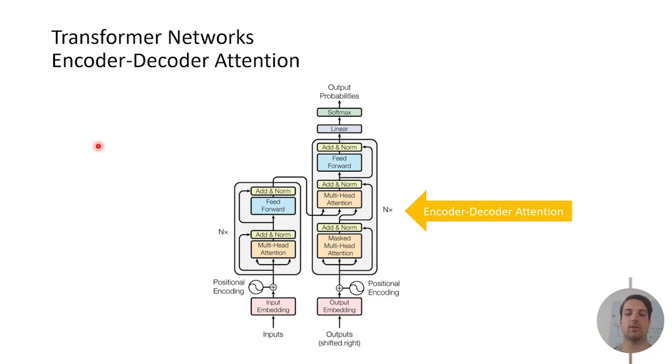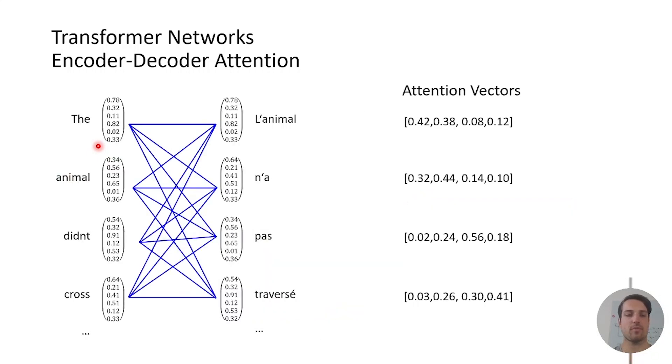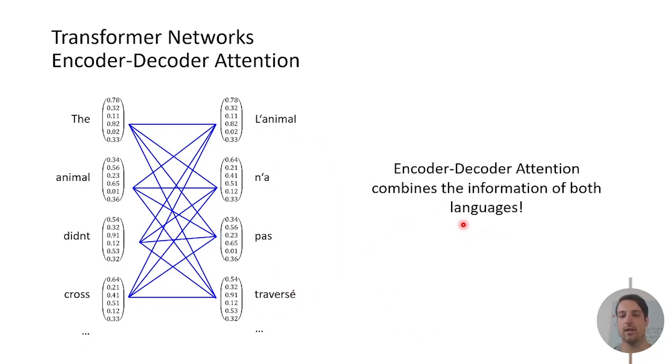And now this is the attention module which is the most important of the whole model, it is called the encoder-decoder attention. The encoder-decoder attention connects the input sequence 'the animal didn't cross' with the target sequence 'l'animal n'a pas traversé'. For translating it from English to French we need to know for the prediction for 'pas' which word of the actual input sequence it should put attention on and this is calculated in the encoder-decoder attention. We receive attention vectors for every part of the target sequence. So the encoder-decoder attention combines the information of both languages and actually makes the translation possible.